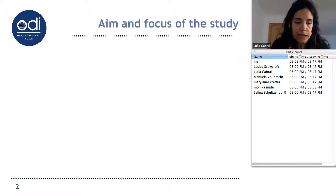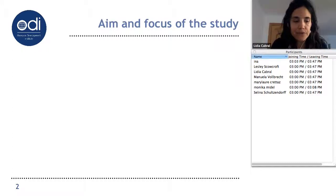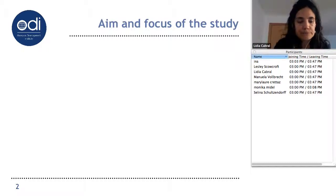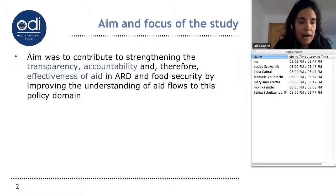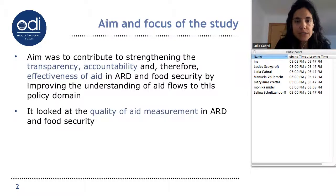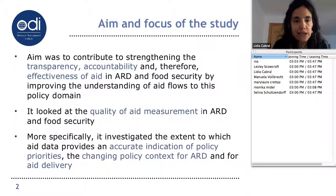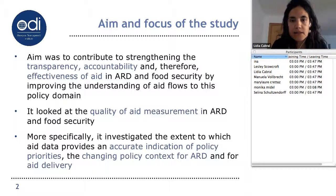The aim was to contribute to a better understanding of aid flows to agriculture, rural development, and food security, and in this way contribute to strengthening transparency and accountability, and as a result the effectiveness of aid. For this purpose, we looked at the quality of aid measurement in agriculture, rural development, and food security — specifically, the extent to which aid provides a good indication of quality priorities and the changing policy context for ARD and aid delivery more generally.